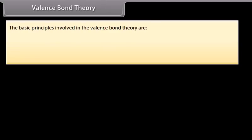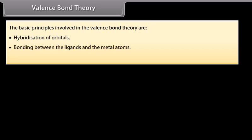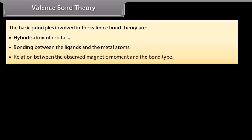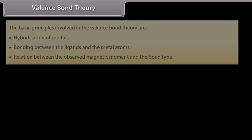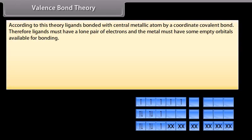Valence Bond Theory: The basic principles involve hybridization of orbitals, bonding between ligands and the metal atoms, and the relation between observed magnetic moment and bond type. According to this theory, ligands bond with the central metallic atom by a coordinate covalent bond; therefore, ligands must have a lone pair of electrons and the metal must have empty orbitals available for bonding. For example, the formation of K4[Mn(CN)6] can be explained on the basis of valence bond theory.